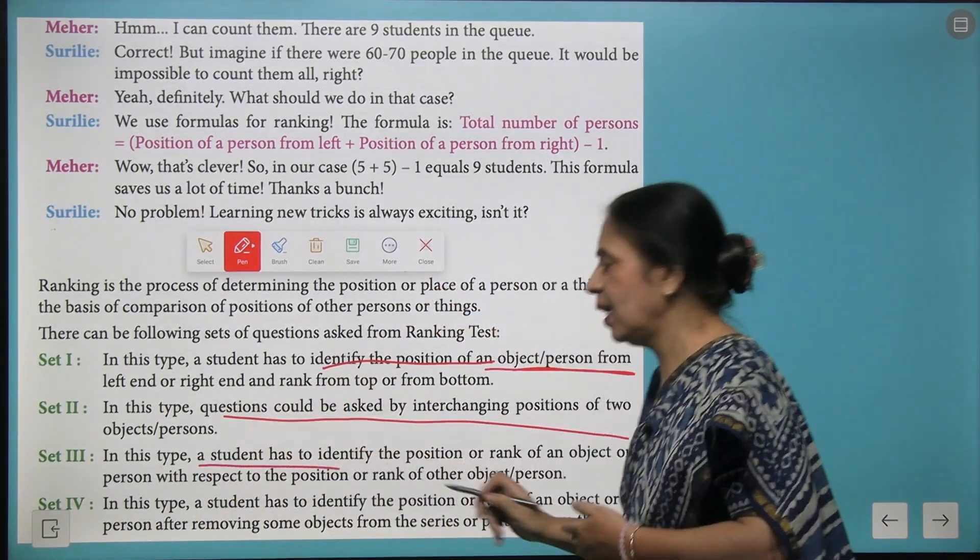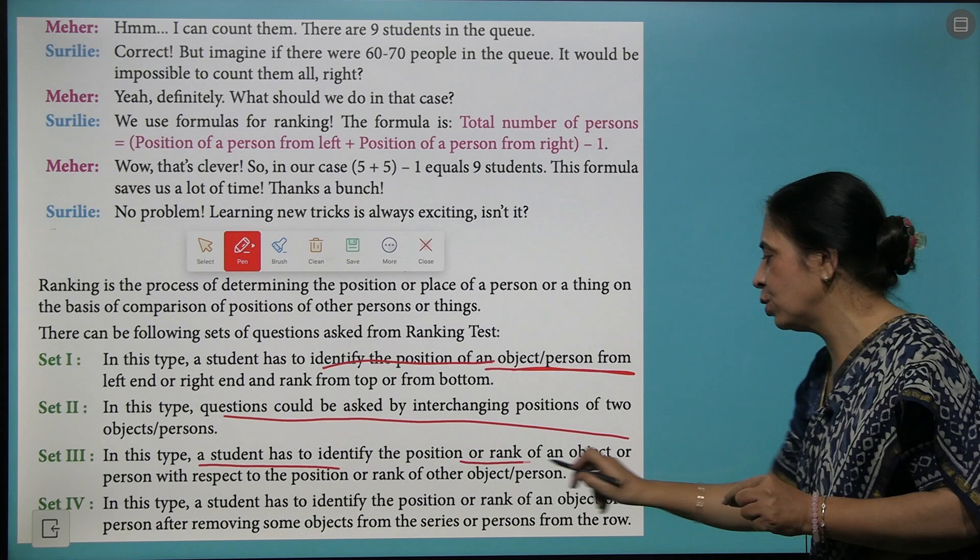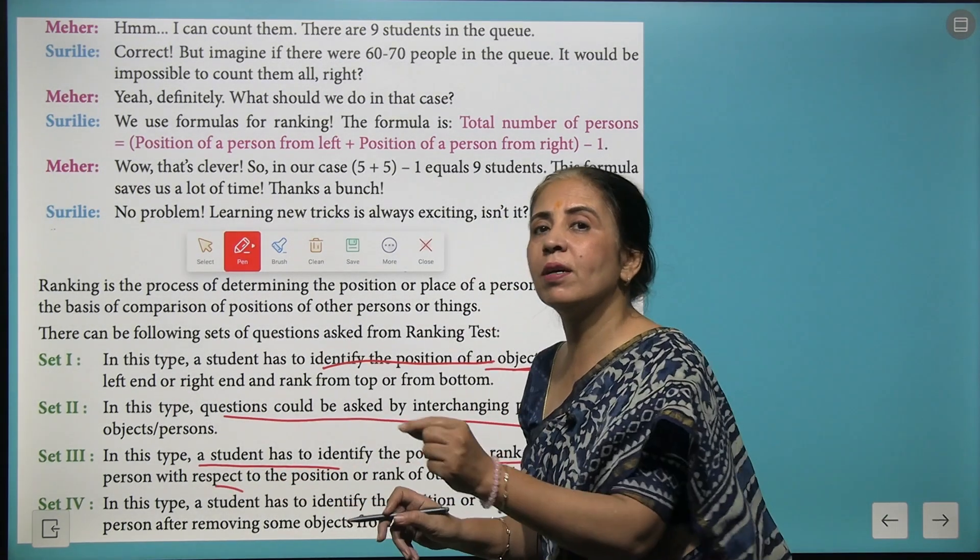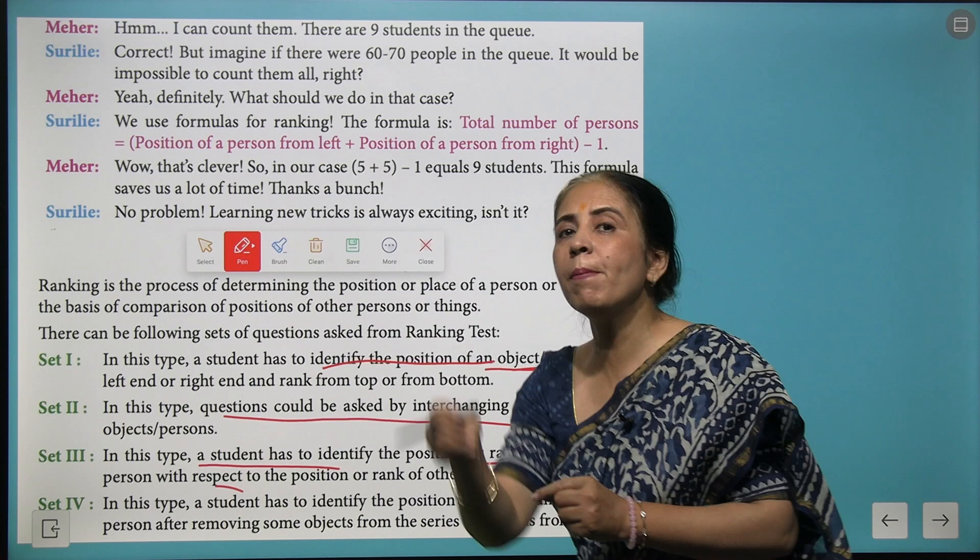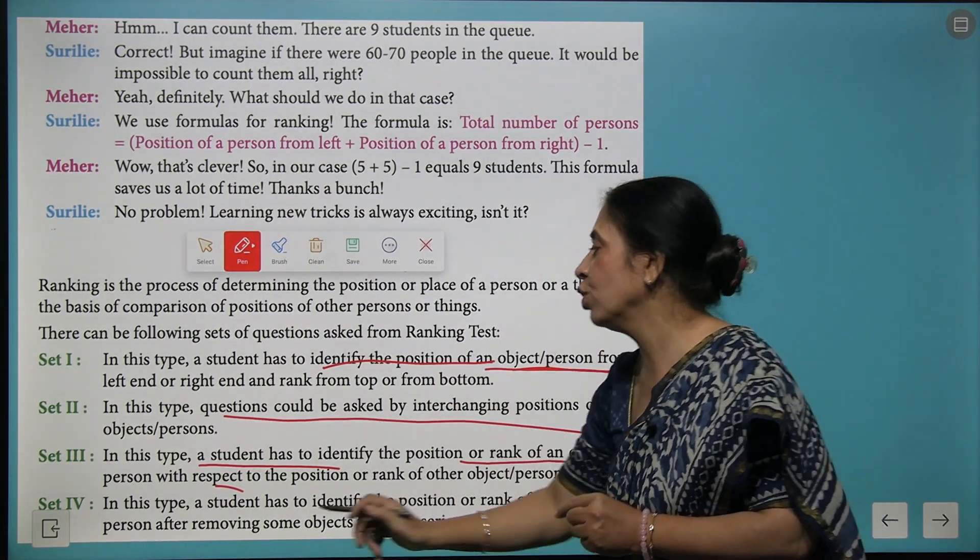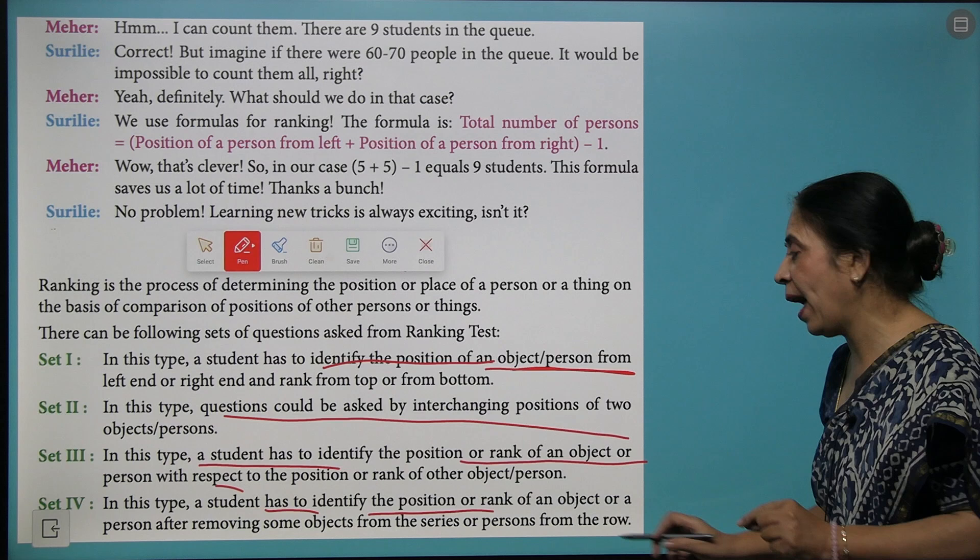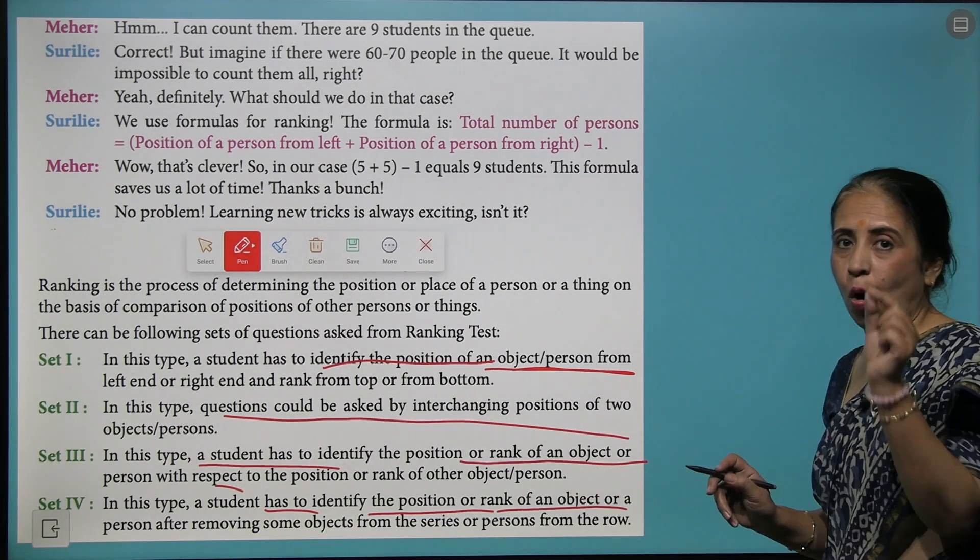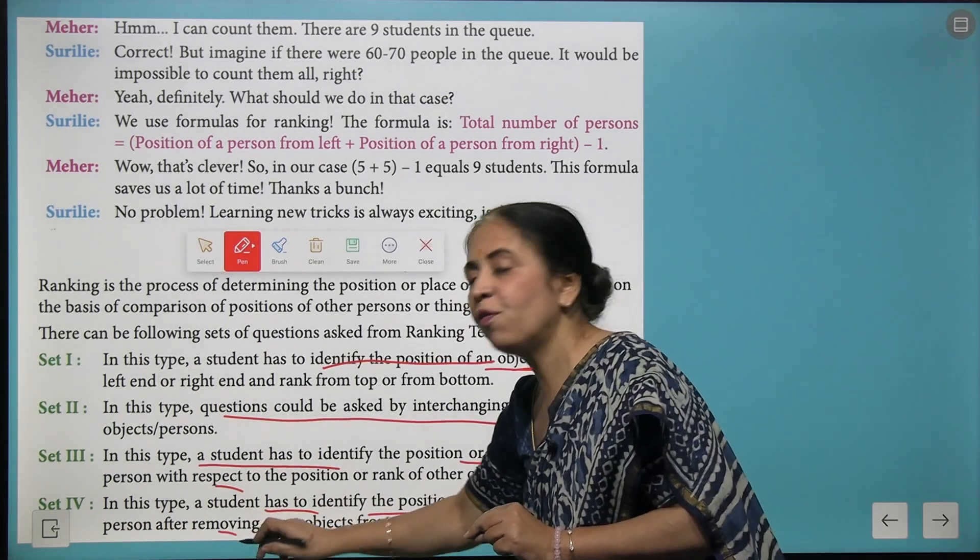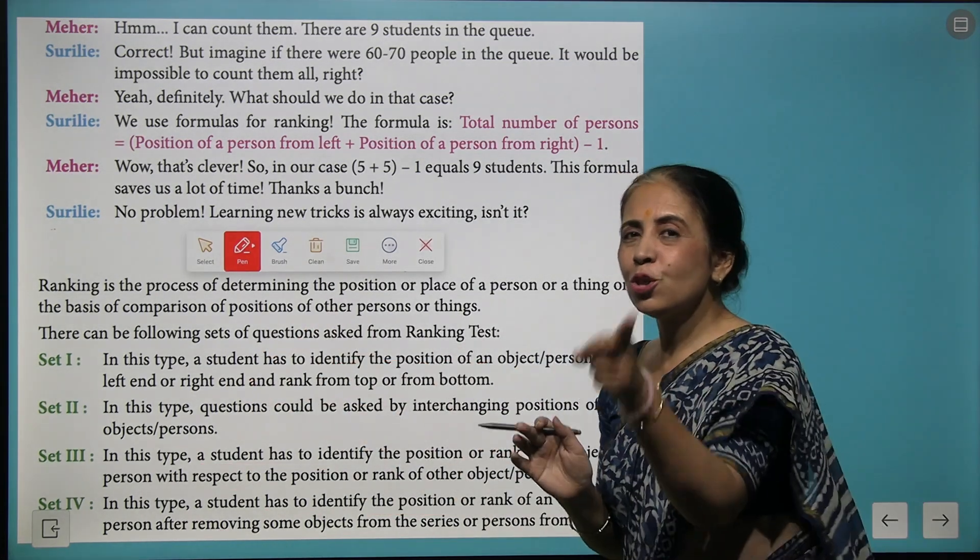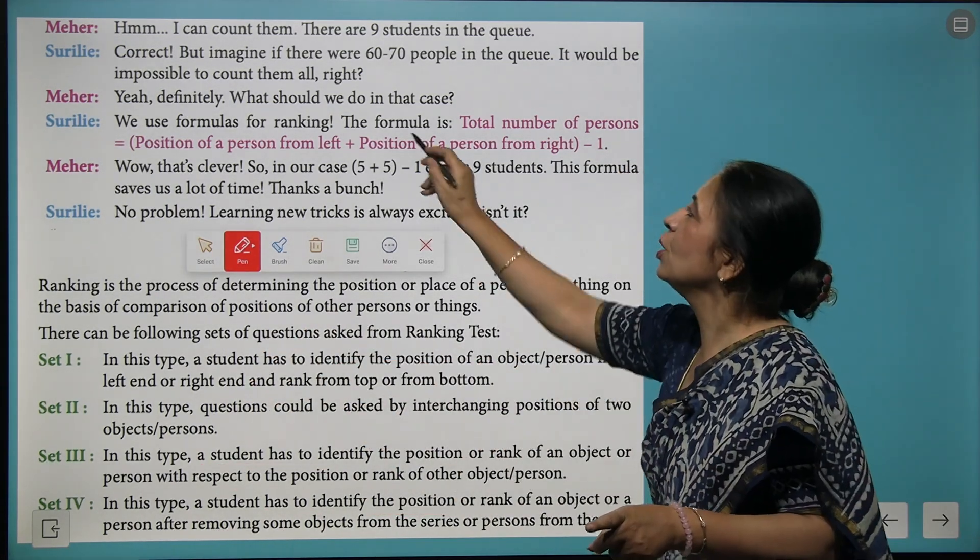Third category is to identify the position or the rank of the object or the person with respect to the position of some other object. The fourth category: you have to identify the rank or position of the object or a person after removing some objects from the line.